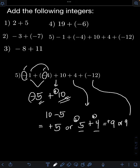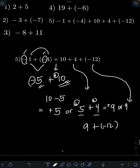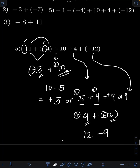And then finally, we need to add 9 plus negative 12. So this time we are adding unlike signs — one positive and one negative. Let's subtract the smaller absolute value, which is 9, from the bigger, which is 12. So 12 minus 9, that will be 3. And then we copy the sign of the one with the bigger absolute value, which is negative 12. So the final answer should be negative 3.